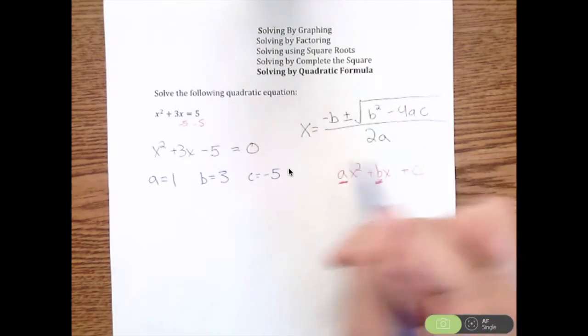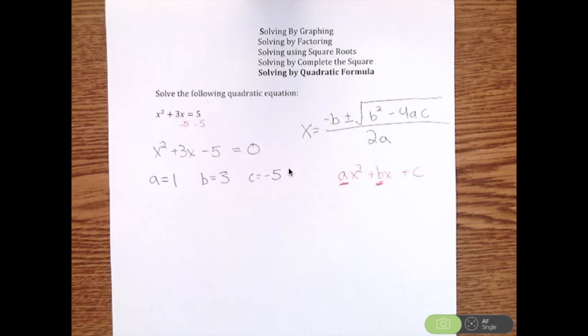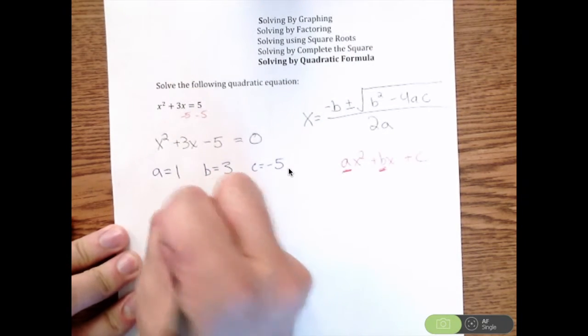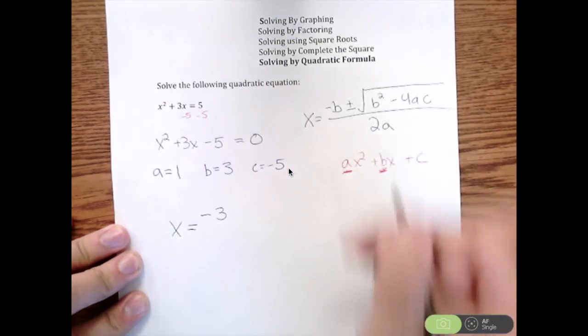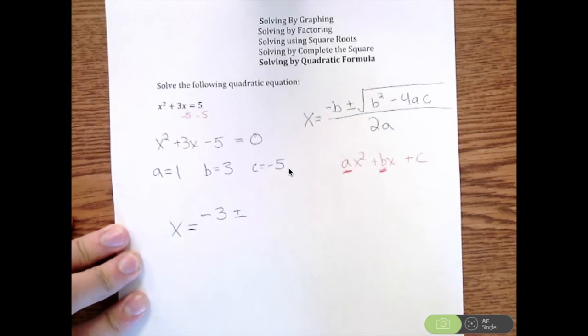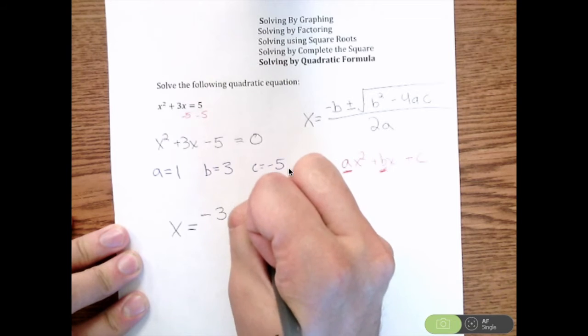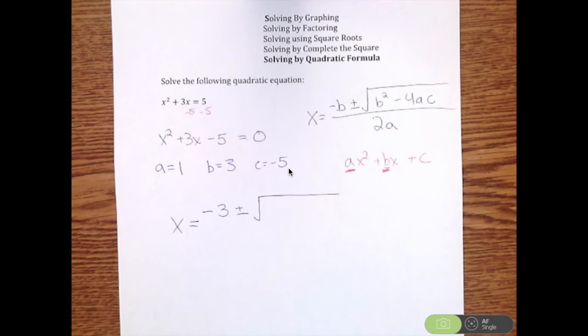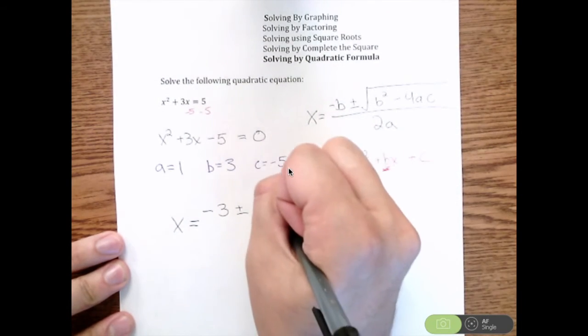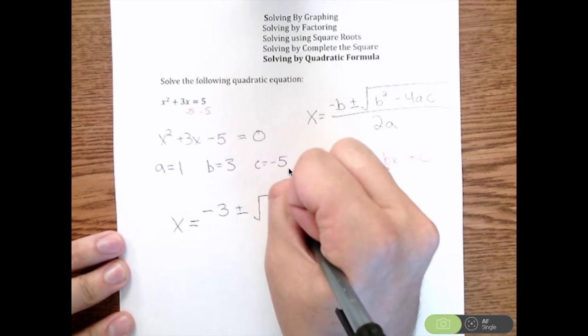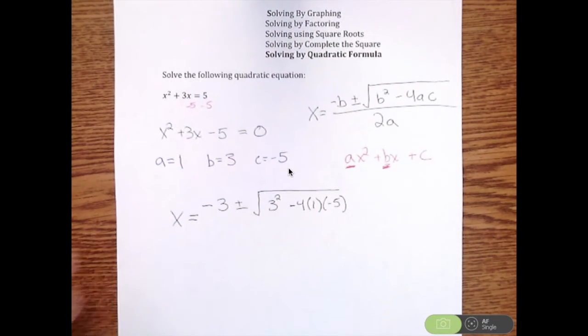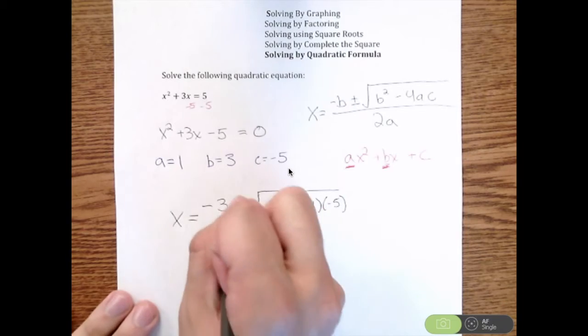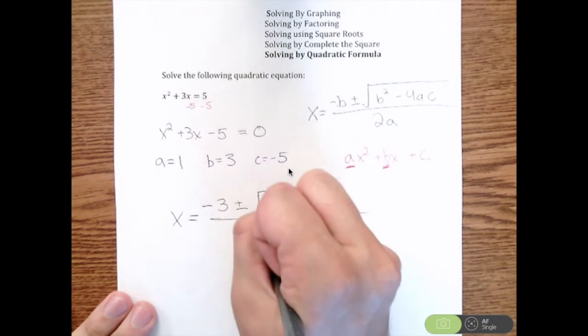So I'm going to work through this and plug all of these pieces into my quadratic formula. So I have x equals negative b plus or minus the square root. I'm going to do b squared minus 4ac. So b is 3, so I have 3 squared minus 4 times a times c. And all of this is going to be over 2 times a, so 2 times 1.